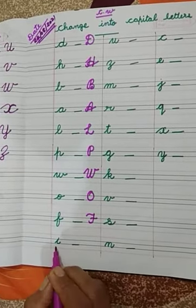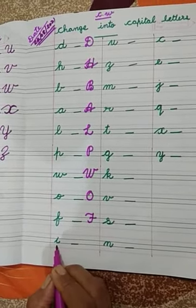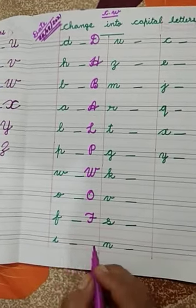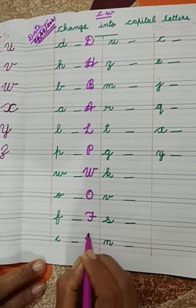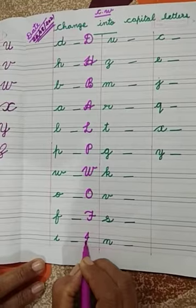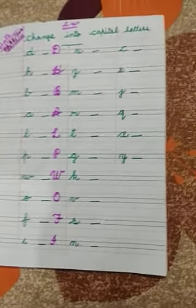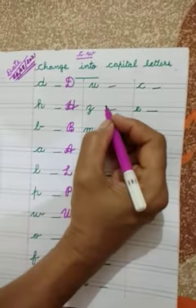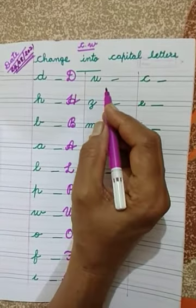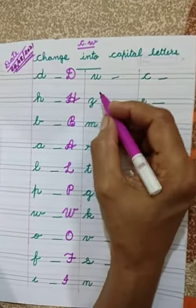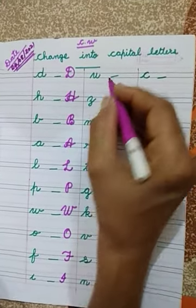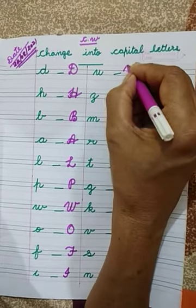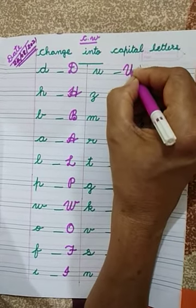Then next letter I — I4 — Ice Cream. Then we have to write here Cursive Capital letter I. I4. The next letter U. Which letter is this? U. Cursive Capital letter — start from the second line.